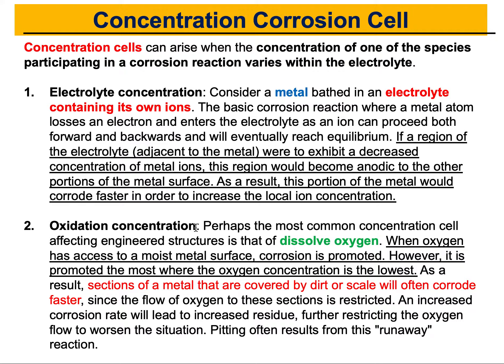The second example is simpler and we can all relate to it — it involves dissolved oxygen. We've all seen a metallic piece that has dirt on it and noticed that beneath the dirt there is corrosion. The reason is that when oxygen has access to a moist metal surface, corrosion is promoted — and it is promoted most where the oxygen concentration is lowest. Dirt prevents oxygen from reaching the metal, while other parts of the metal remain exposed. This creates a cell where the portion of metal beneath the dirt becomes anodic due to its lower oxygen concentration.